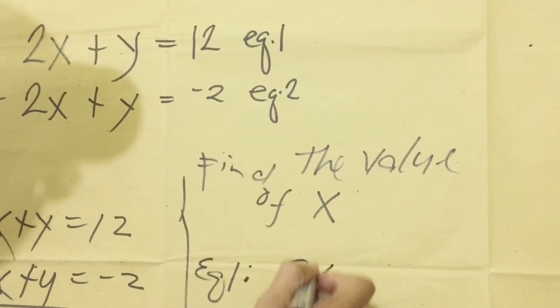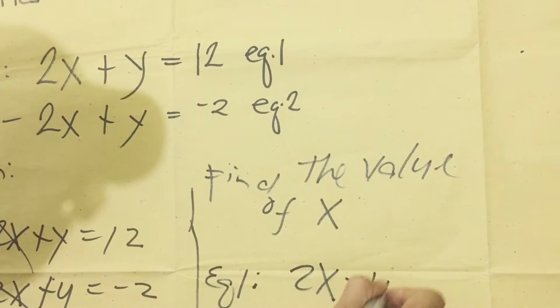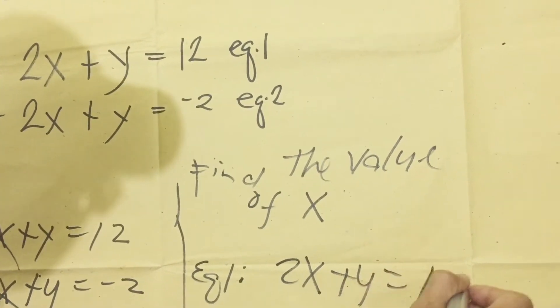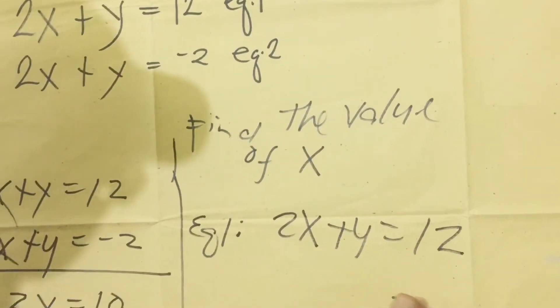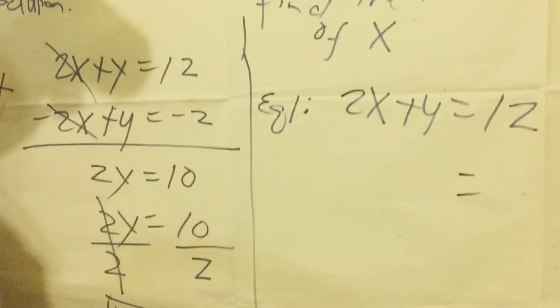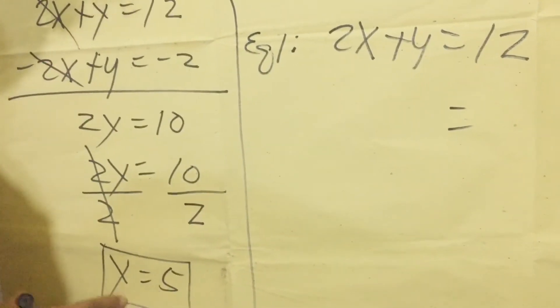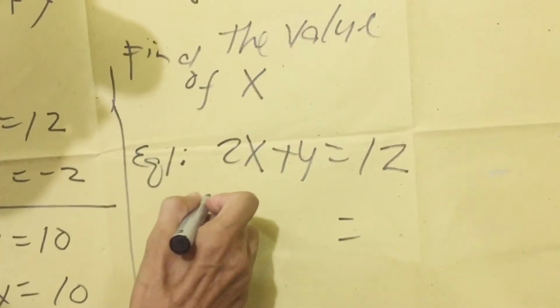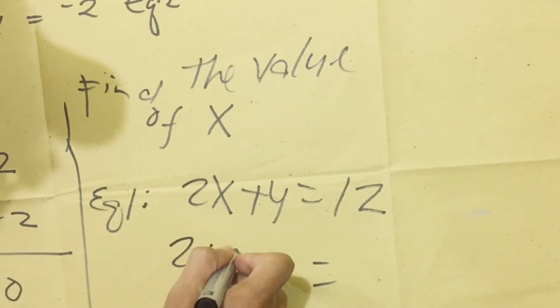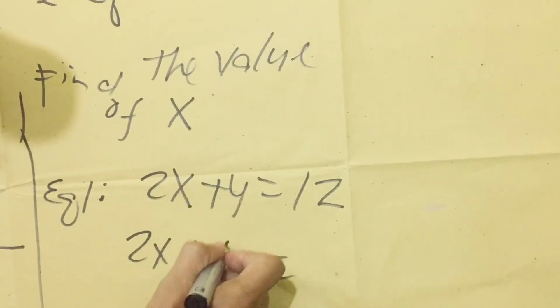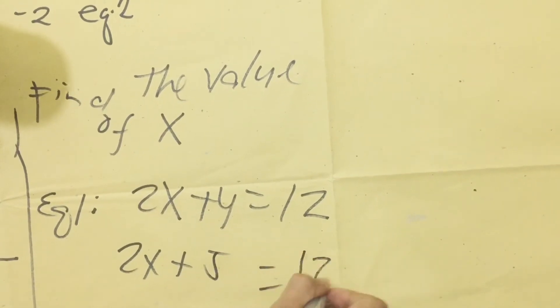Given is 2x plus y equals 12. And then from the result of our computation, y equals 5, so we're going to substitute here. 2x plus, what's the value of y? Positive 5. Then 12.